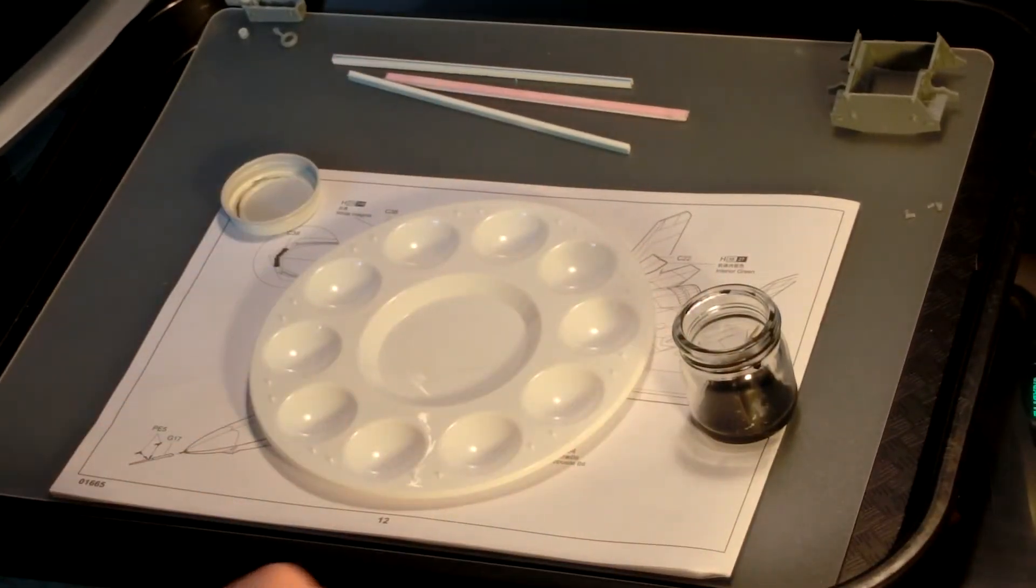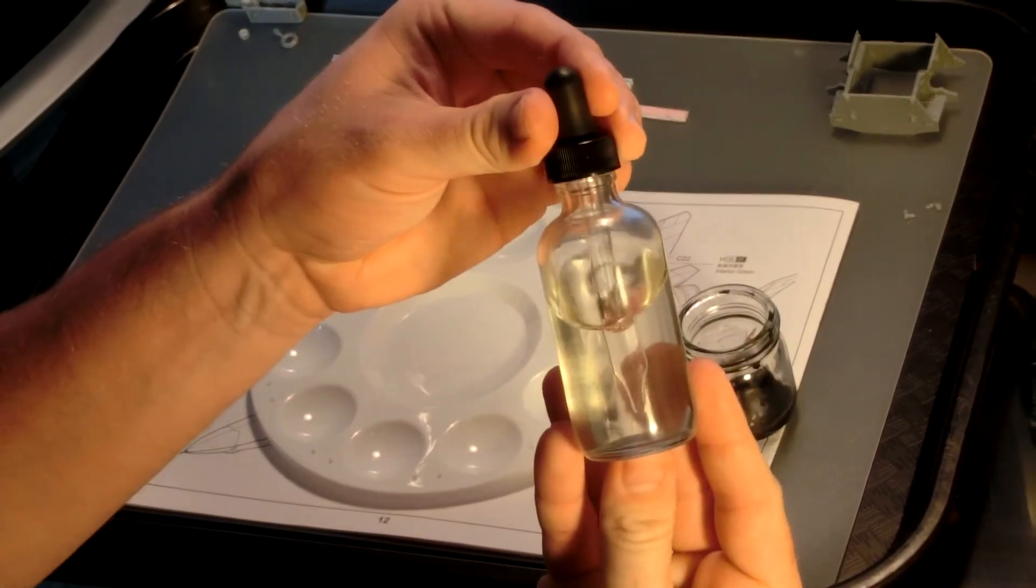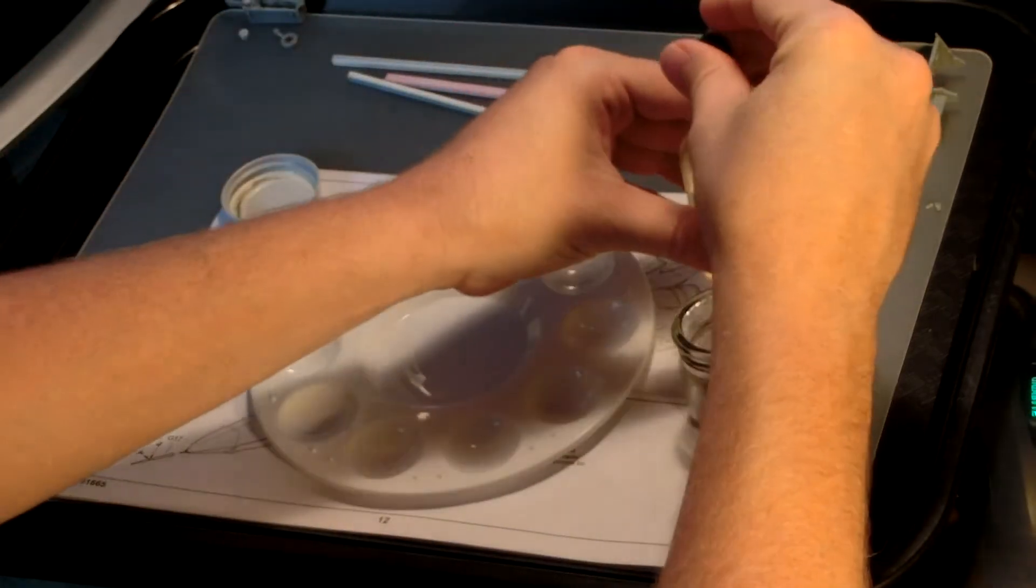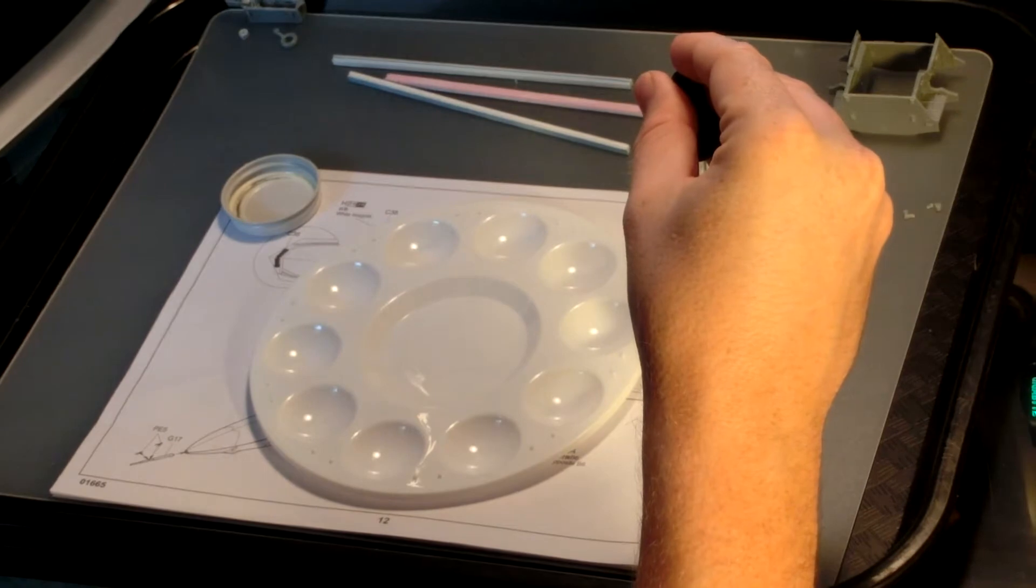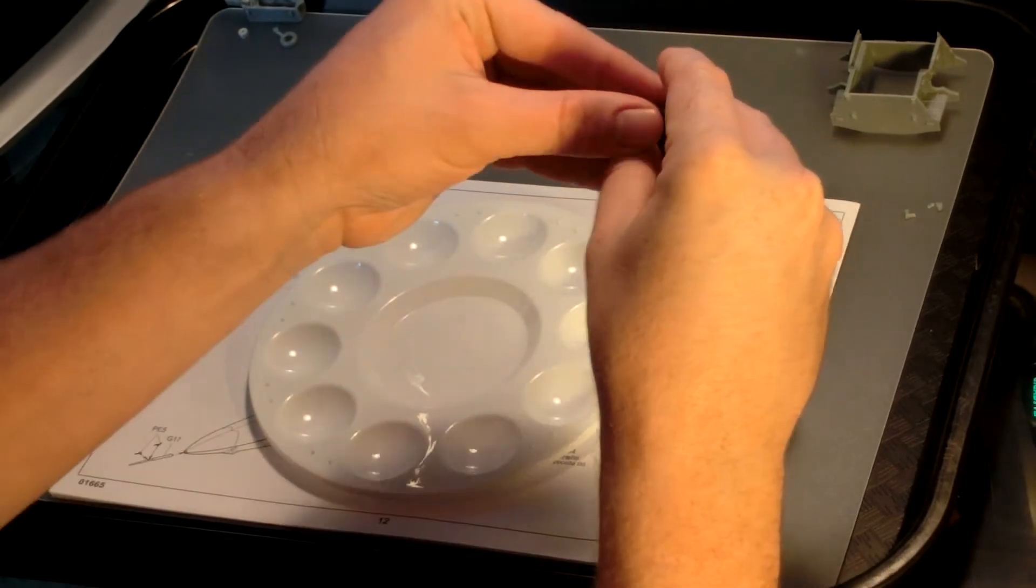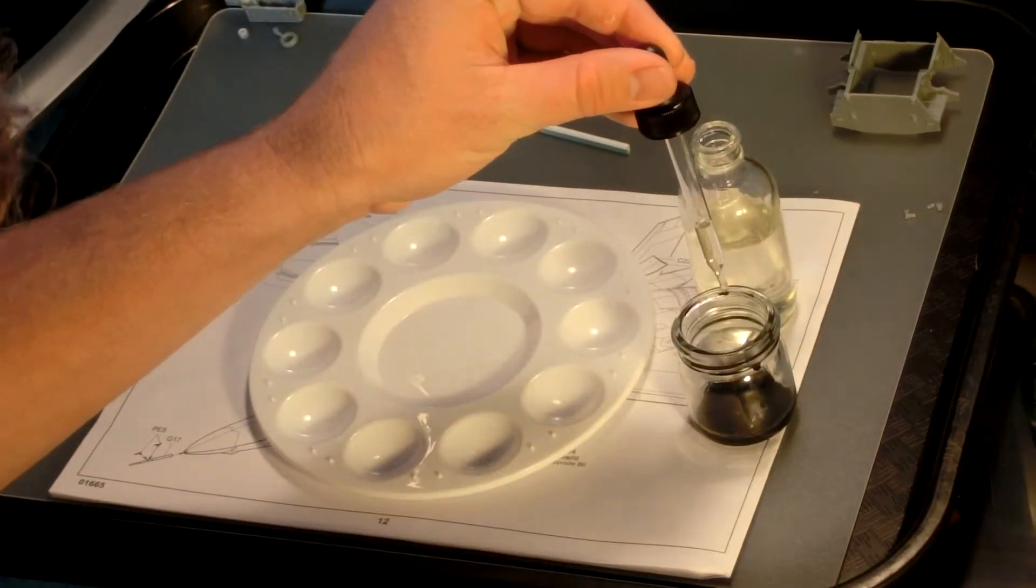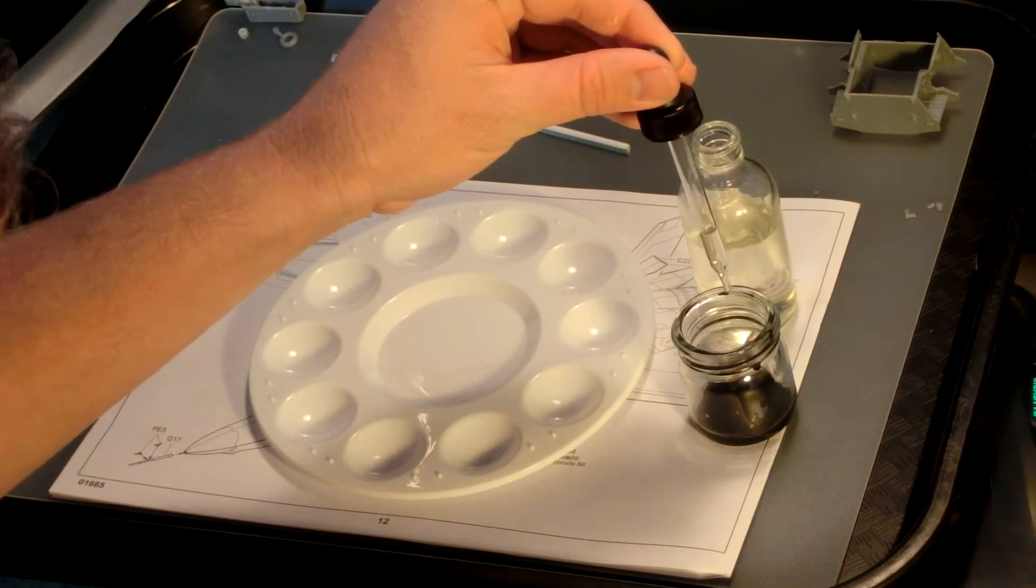So, the first thing you need to do is reconstitute all of the colors. Add about 15 drops of clear paint thinner from your dropper before you use the paint. Grab a toothpick and stir, stir, stir. Make sure everything is mixed together very well.